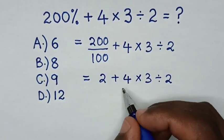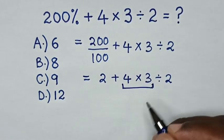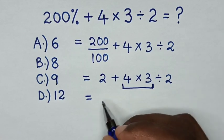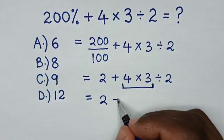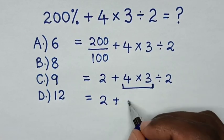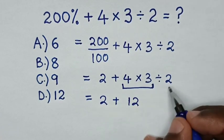Then in next step, we will deal with this multiplication. So it will be equal to 2 plus 4 times 3 is 12, then divided by 2.